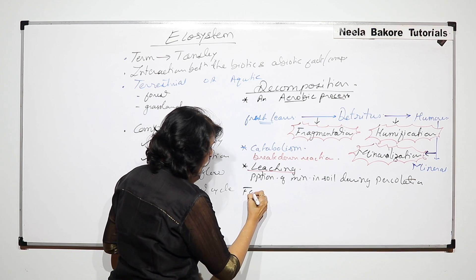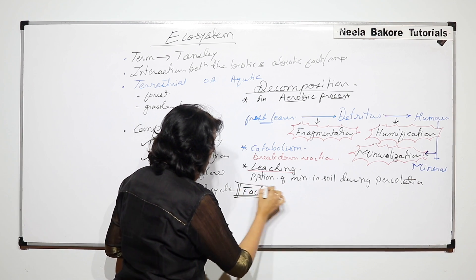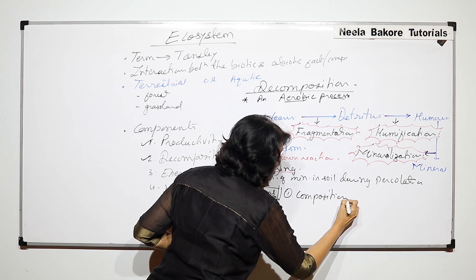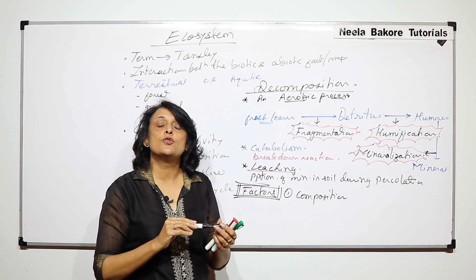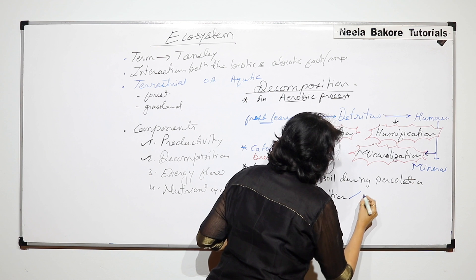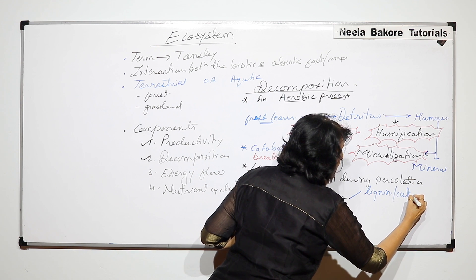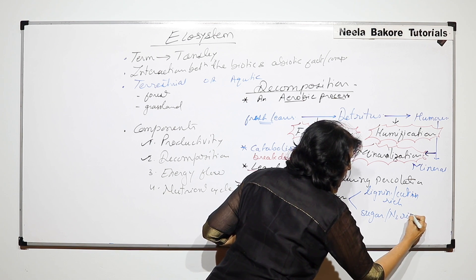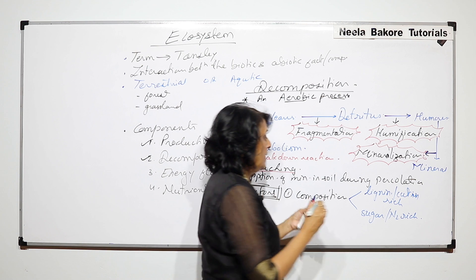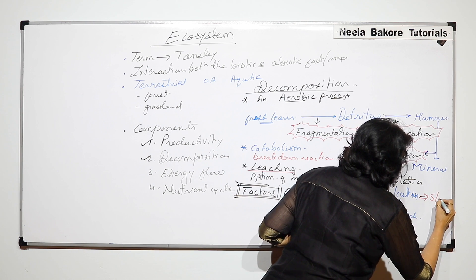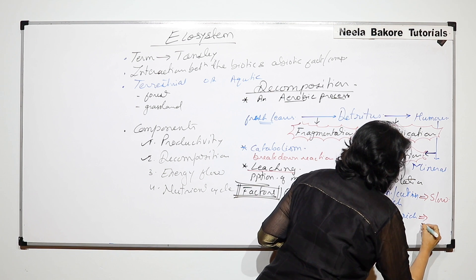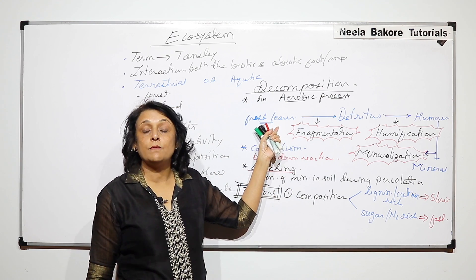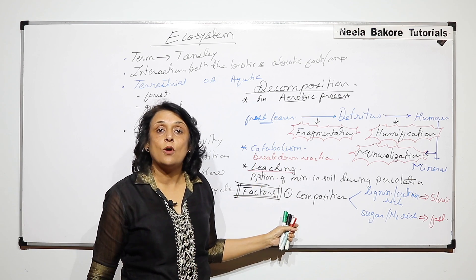There are factors which decide the rate of decomposition. The first is the composition of the material to be decomposed. If the material is lignin or cutin rich, the rate of decomposition is very slow. If it is sugar or nitrogen rich, decomposition is faster. So the composition of detritus or organic matter decides the rate of decomposition.